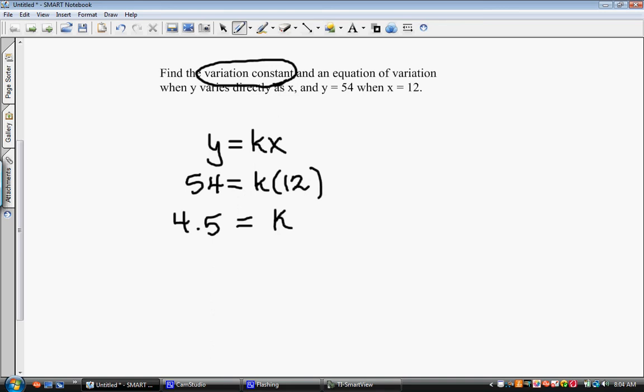Then it says, and an equation of variation for these conditions that we have when y varies directly as x. So what we want to do now is we want to use that same template that we have, the y equals kx. And we want to place our 4.5 in for the k. So y equals 4.5x. This is what we call the equation of variation.